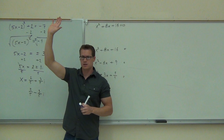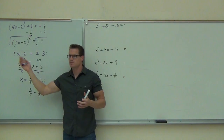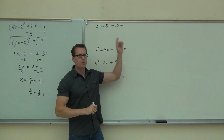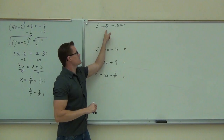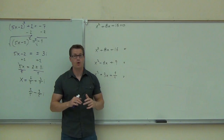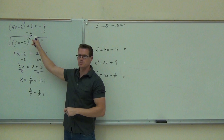Divide by 5 to get x by itself: x equals 2 plus or minus 3i, all over 5. We write it as a complex number: 2 fifths plus 3 fifths i and 2 fifths minus 3 fifths i. Notice the number in front never changes sign — it's just the plus or minus that changes. These are our two solutions.